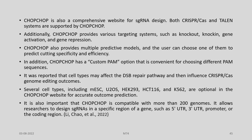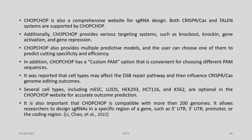CHOPCHOP is a comprehensive website for sgRNA design supporting both CRISPR and TALEN systems, providing various targeting options such as knockout and knockin with multiple predictive models. It has a custom PAM option, supports cell-type-specific DSB repair pathway prediction, includes cell types such as mESC and U2OS, and is compatible with more than 200 genomes. It allows researchers to design sgRNA in specific gene regions such as 5' or 3' UTR, promoter, or coding region.